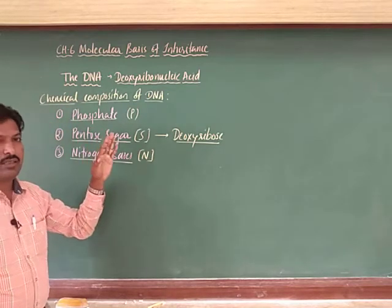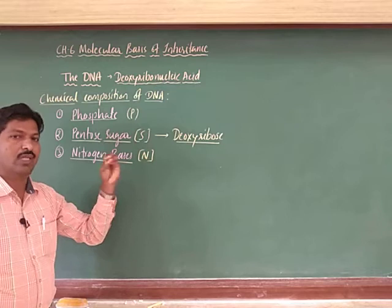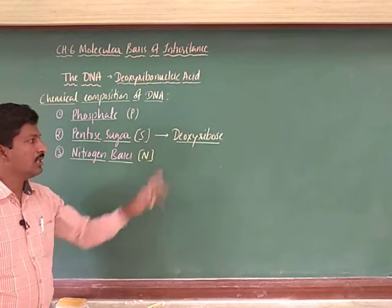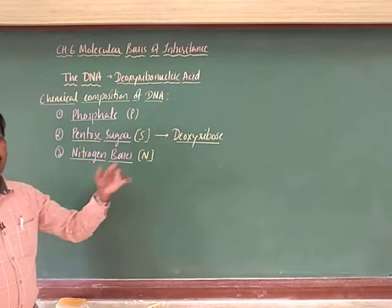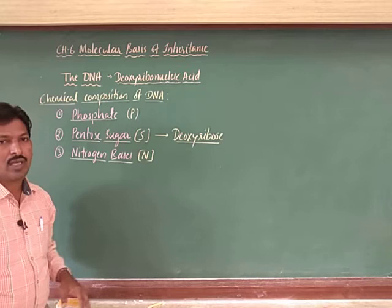In RNA, that was only ribose; here in DNA it is deoxyribose — so you know the difference.